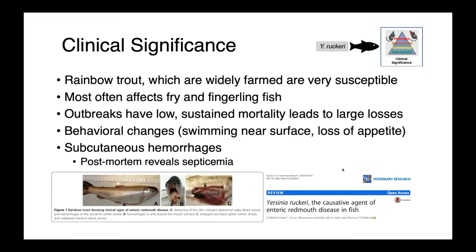Rarely, Yersinia enterocolitica has also been associated with enteric diseases in ruminants. Yersinia ruckeri is an important pathogen of farmed fish — rainbow trout and other salmonids are very, very susceptible. These infections most often affect fry and fingerling fish, and what we see is a low level of mortality that persists, so over time we ultimately end up with large losses. In affected fish we see behavioral changes — swimming near the surface, loss of appetite — and subcutaneous hemorrhages are also oftentimes seen. Subcutaneous hemorrhaging is a great sign for sepsis in aquatic species, and post-mortem investigation often reveals septicemia.